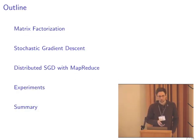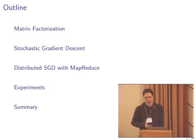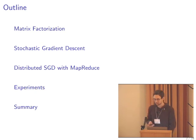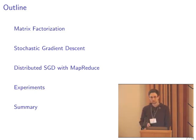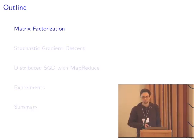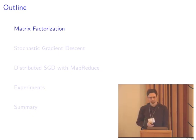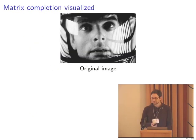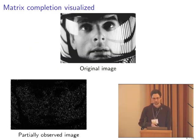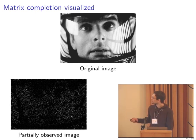What are we going to talk about? We're going to talk about matrix factorization using gradient descent or stochastic gradient descent. Here's a simple example of what we're trying to do. Here's a matrix. Suppose that for some reason we do not observe the entire matrix — we just observe some points.